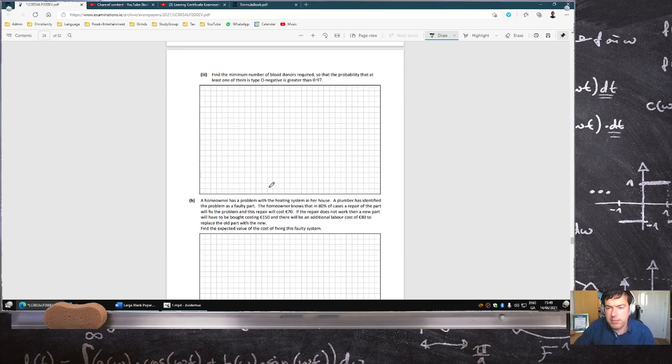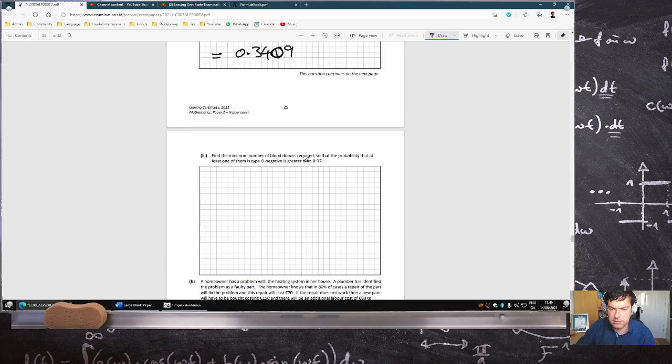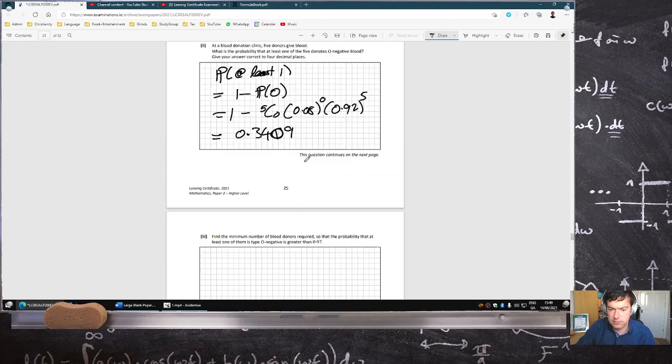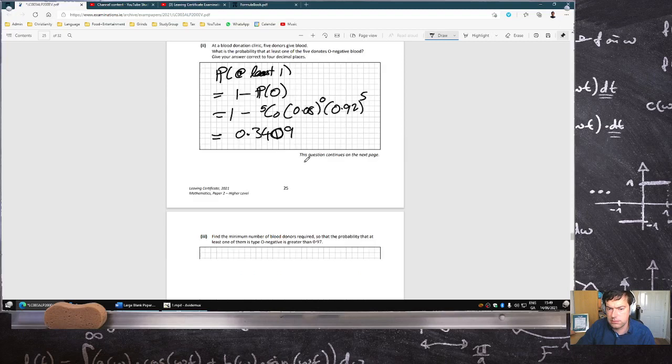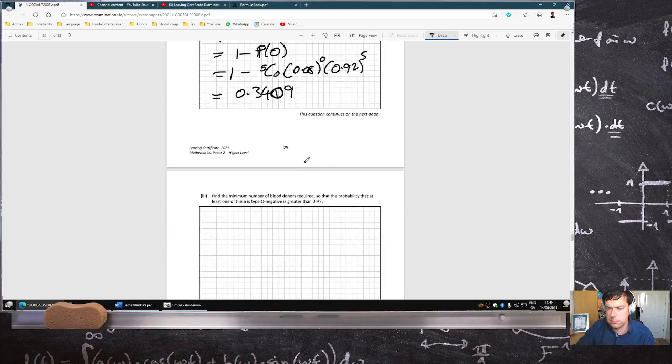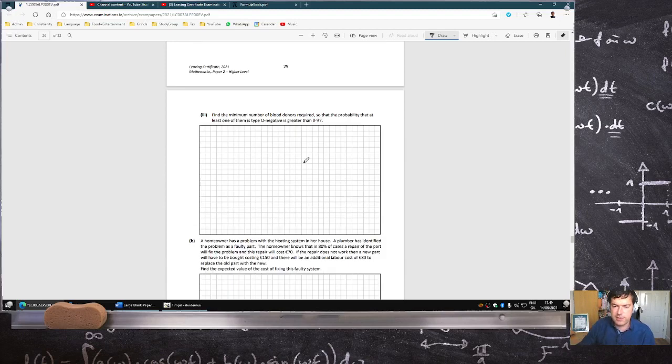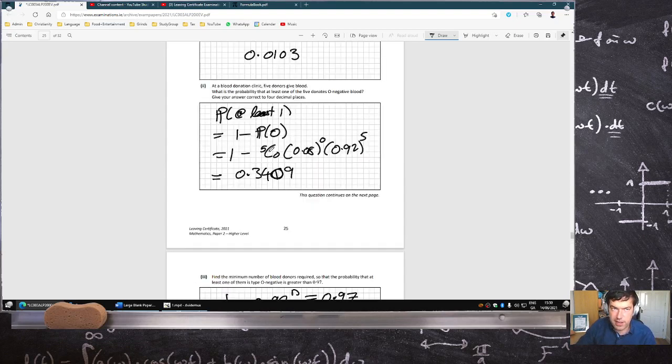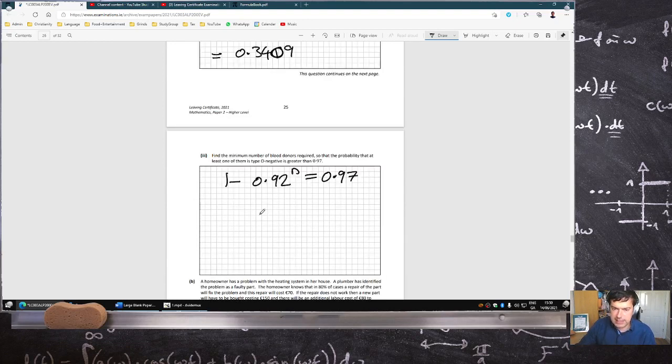Find the minimum number of blood donors required so the probability that at least one of them is type O negative is greater than 0.97. So one minus 0.92 power N needs to be at least 0.97. This is the one minus none of them business again because nc0 is 1 and power 0 is also 1.